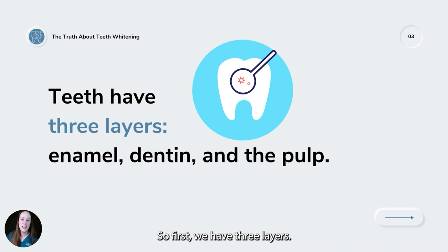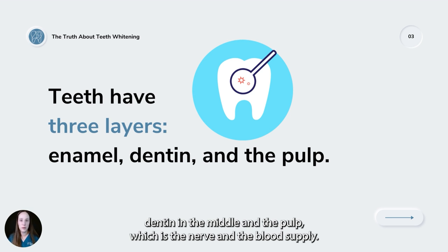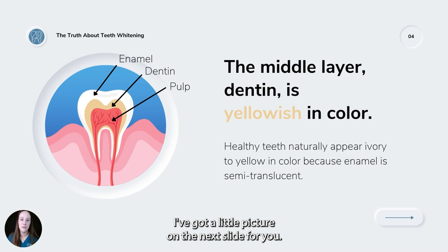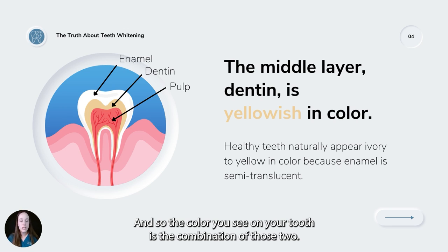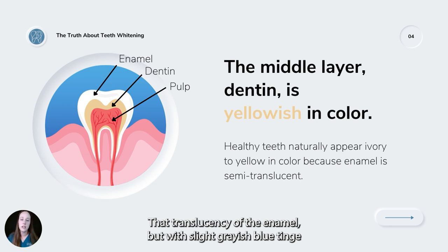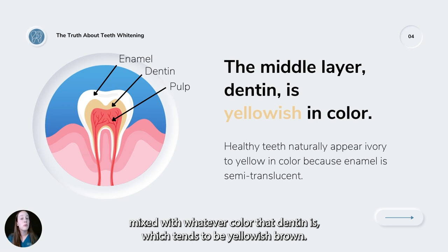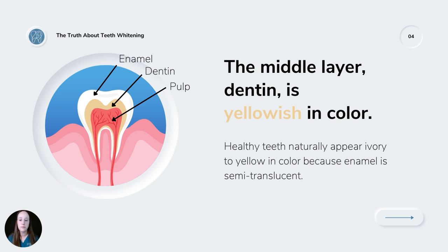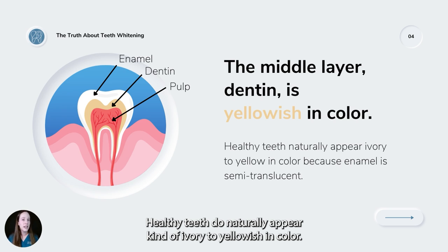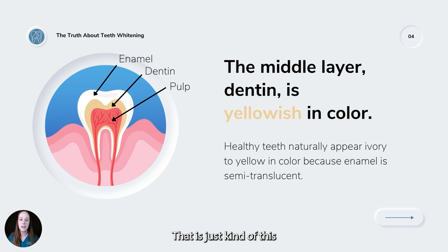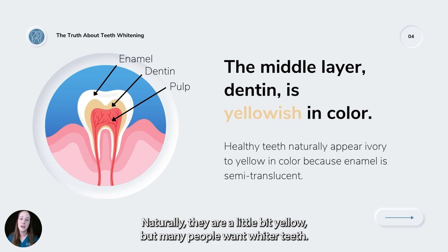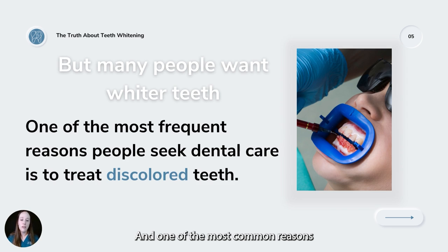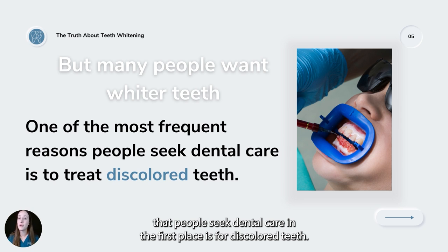Teeth have three layers: enamel on the outside, dentin in the middle, and the pulp, which is the nerve and blood supply. The dentin is what is yellowish in color. The enamel is semi-translucent, kind of grayish blue, but mostly clear. The color you see on your tooth is the combination of those two — the translucency of the enamel mixed with whatever color the dentin is, which tends to be yellowish brown. Healthy teeth naturally appear kind of ivory to yellowish. They're not toilet bowl white. That is just a westernized idea of what tooth health should be.